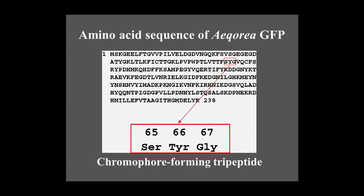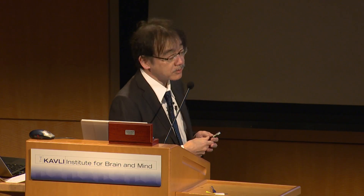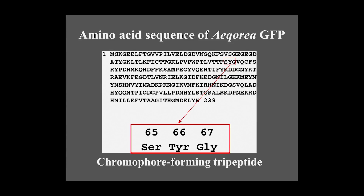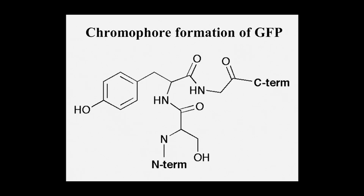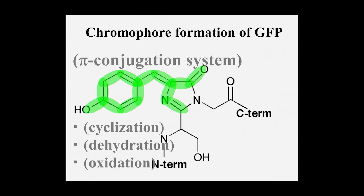This is the primary structure of E. coli GFP — just 238 amino acids. There is no chromophore defined in the peptide itself. But from three specific amino acids, three reactions occur spontaneously: cyclization, dehydration, and oxidation, to make the pi conjugation system. This is GFP's chromophore, which absorbs blue light. But this slide doesn't say anything about its fluorescence.